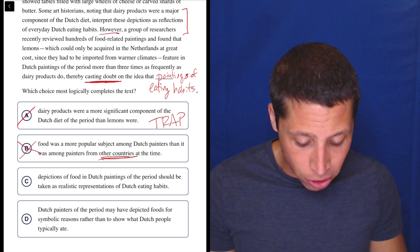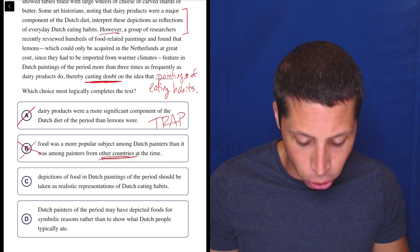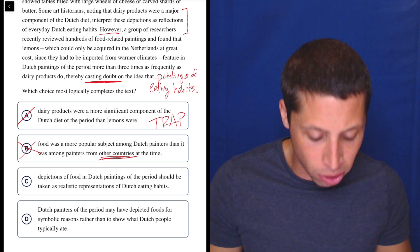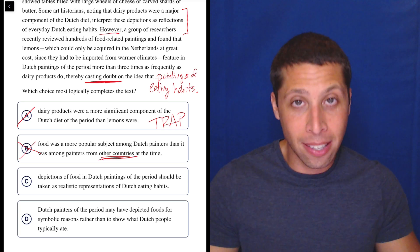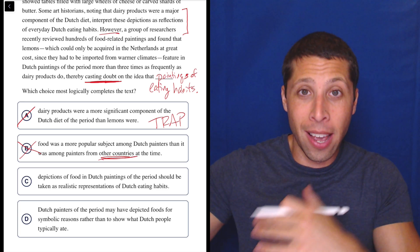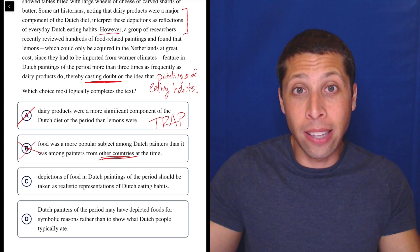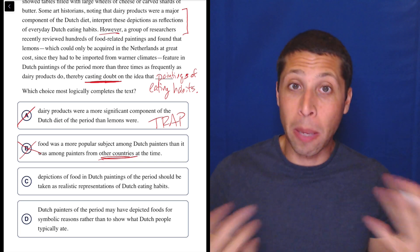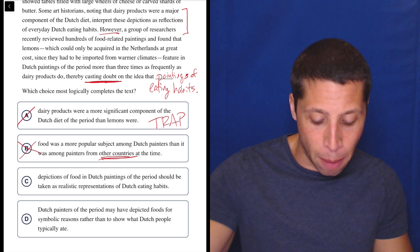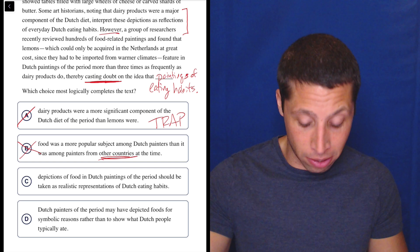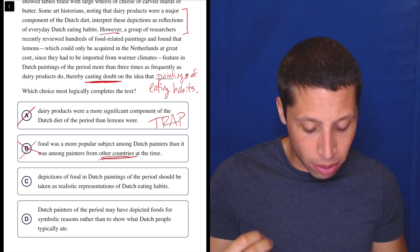Casting doubt on the idea that depictions of food in Dutch paintings of the period should be taken as realistic representations of Dutch eating habits. Yes, because that's what they thought originally. They originally thought that all this dairy stuff was like, hey, this is what they eat all the time. So this is what they paint. But now we're doubting that because they're painting lemons, even though they don't have lemons. So this is the right answer.